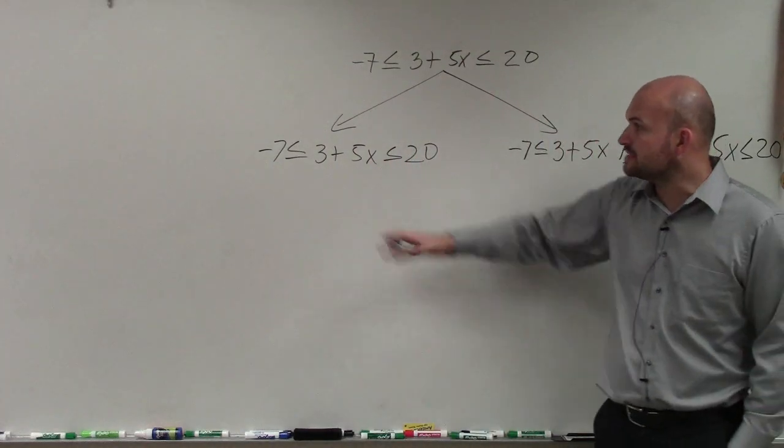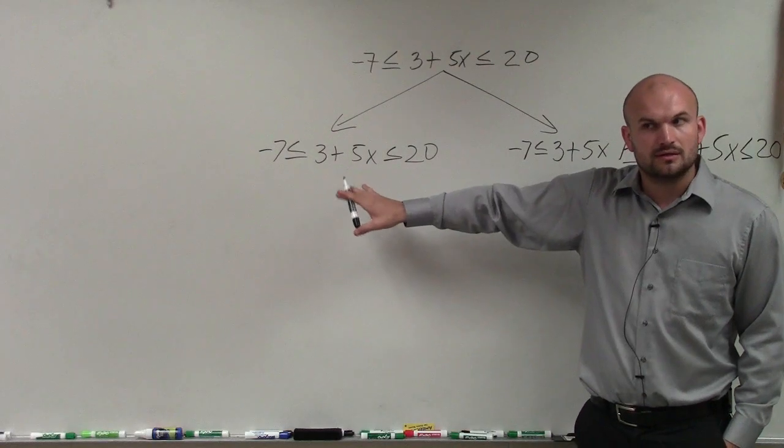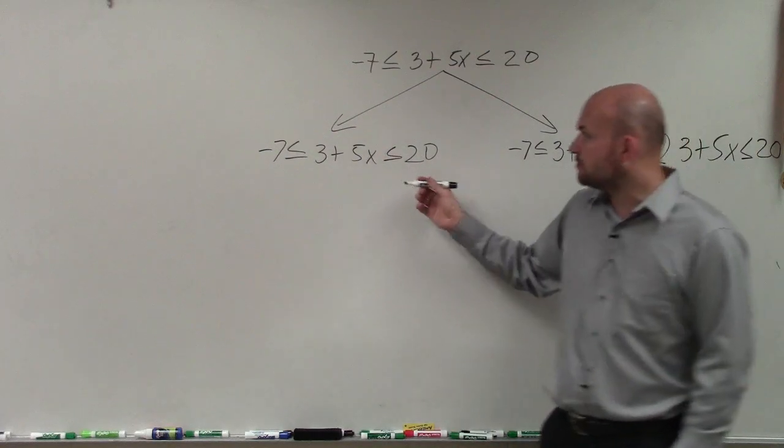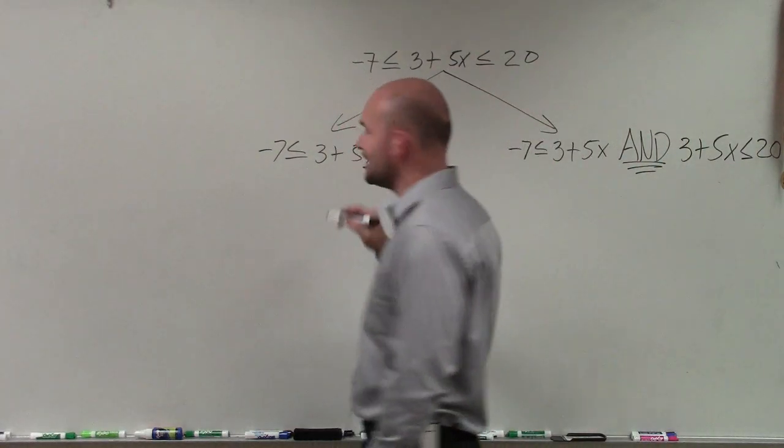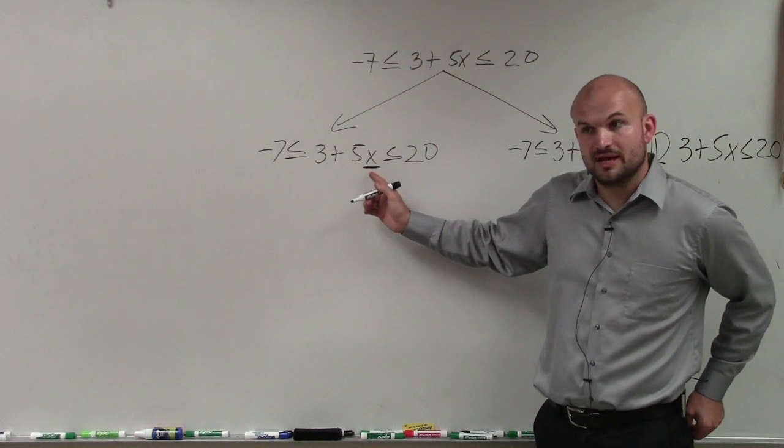And the other method that we go through is just like solving an equation, you can solve a compound inequality using your same operations. What we want to do is isolate the x in between. So to do that, we need to undo the operations that's happening to that x.